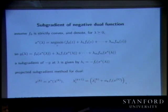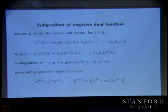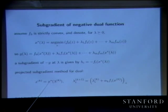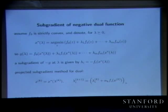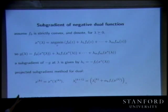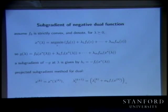It's a price update algorithm. You start with any prices you like — they have to be non-negative. You calculate the optimal x; there's no reason to believe this x is feasible. But if the optimal x is feasible at any step, you're done — globally optimal. Not only that, you have a primal-dual pair proving it.